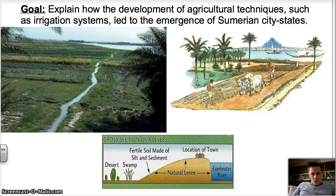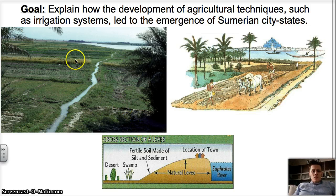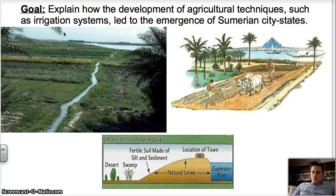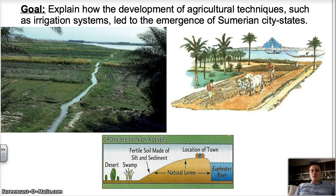Welcome back, this is Mr. McCall and this is World History. The goal today is to explain how the development of agricultural techniques such as irrigation systems led to the emergence of Sumerian city-states.